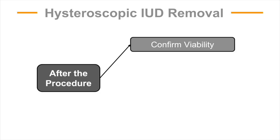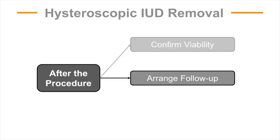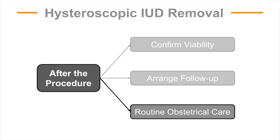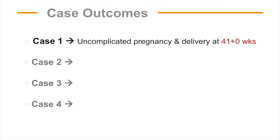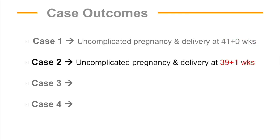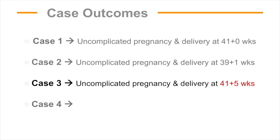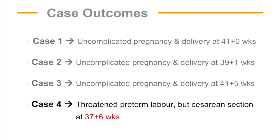After the procedure, all patients have viability confirmed. They undergo same-day discharge and a follow-up ultrasound and visit is arranged two weeks later. If all is well, patients and their obstetricians are advised that they can resume routine obstetrical care. The four cases presented here all had successful outcomes. Cases 1, 2, and 3 all had uncomplicated pregnancies and vaginal deliveries at term. Case 4 had threatened preterm labor but eventually underwent cesarean section at 37 weeks and 6 days.